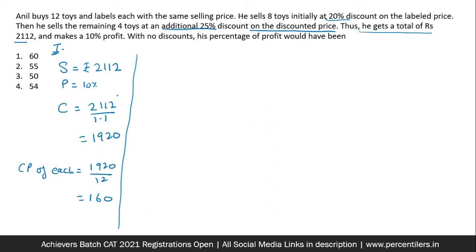We can find the marked price. So marked price, they say labeled with the same selling price. That is nothing but the marked price M. So let the marked price of all the elements or all the 12 toys would be M.